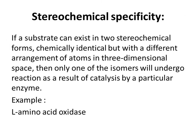The other type of specificity is stereochemical specificity. In addition to showing chemical specificity, enzymes exhibit stereochemical specificity. That means if a substrate can exist in two stereochemical forms — D and L form — chemically identical but with different arrangement of atoms in three-dimensional space, then only one of the isomers will undergo a reaction as a result of catalysis by a particular enzyme. Such enzymes are called stereochemical specific enzymes. An example is D and L amino acid oxidase.